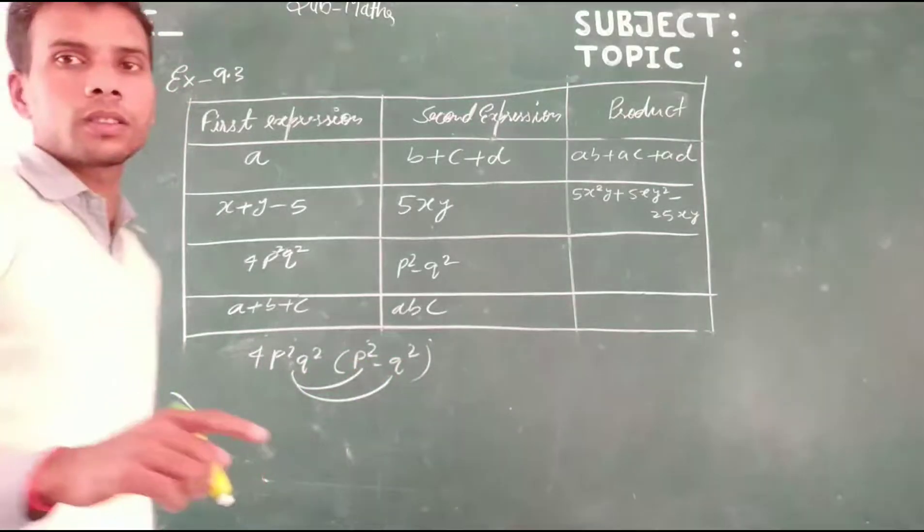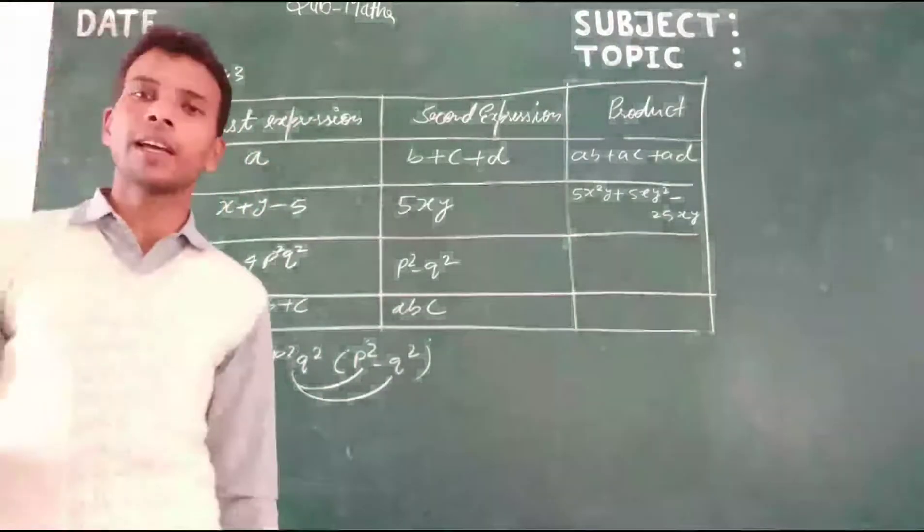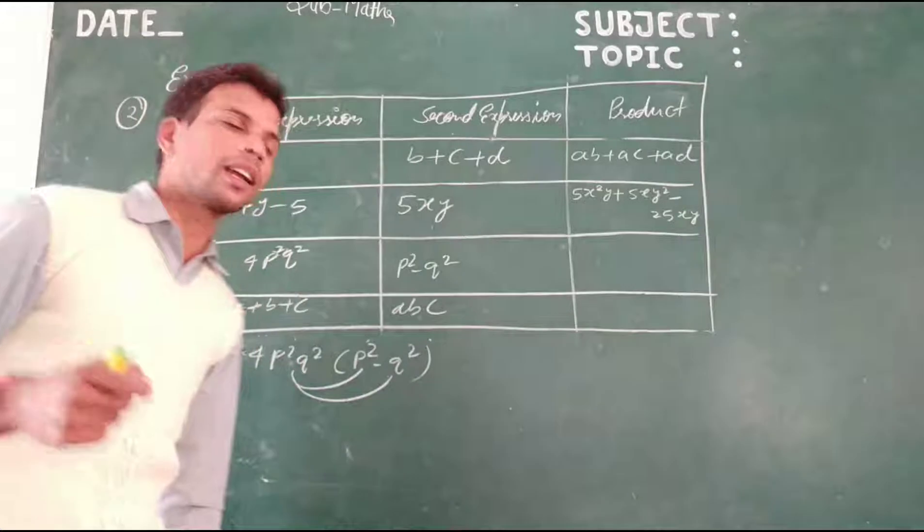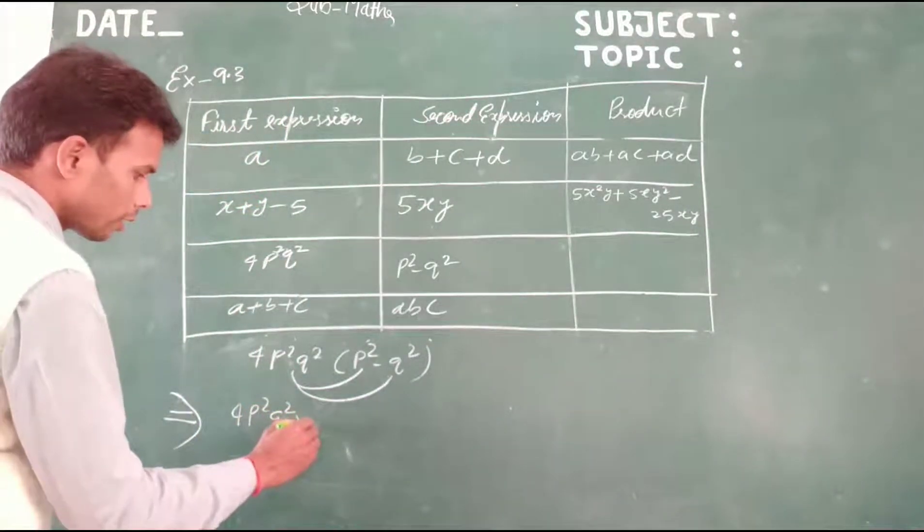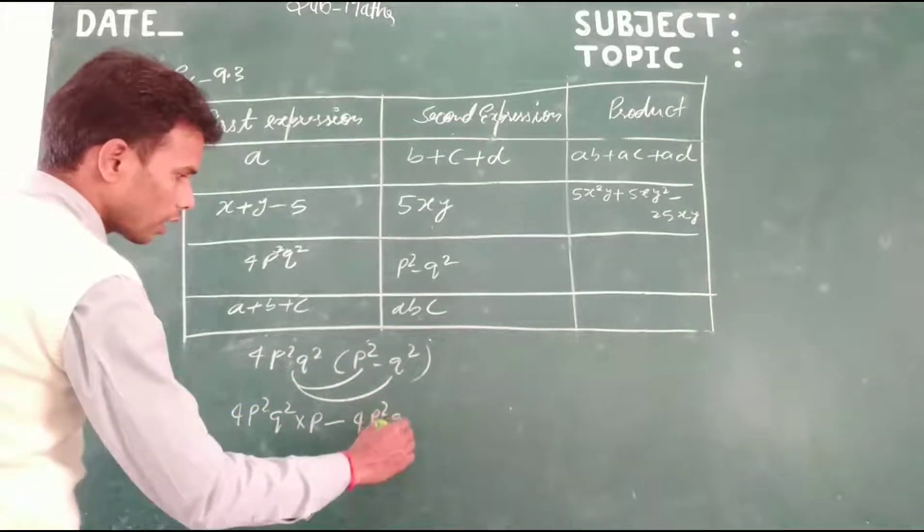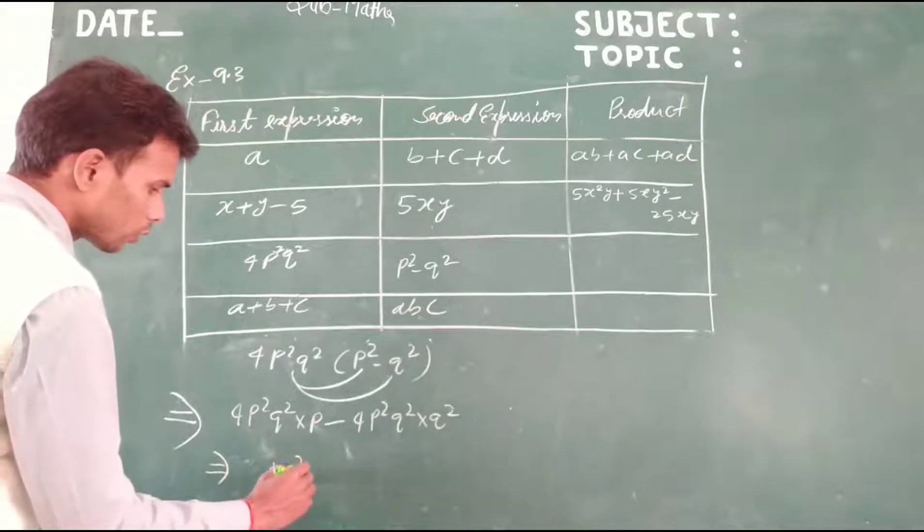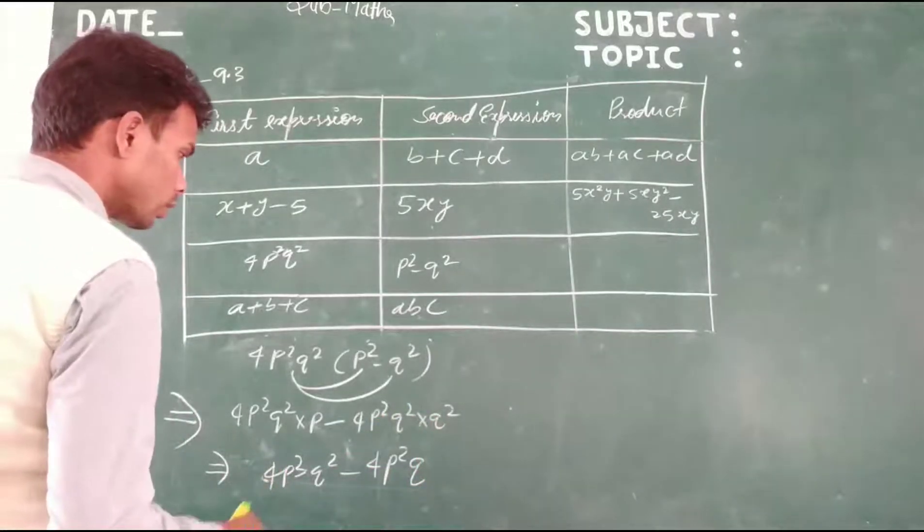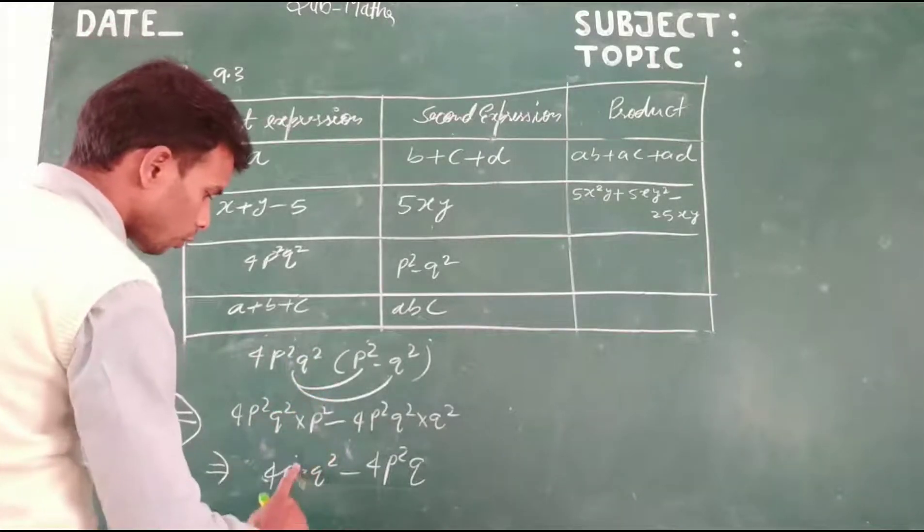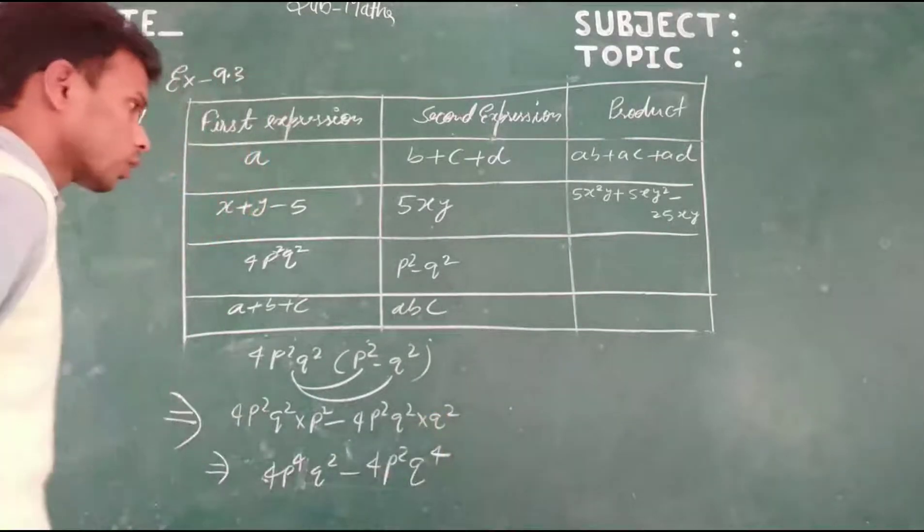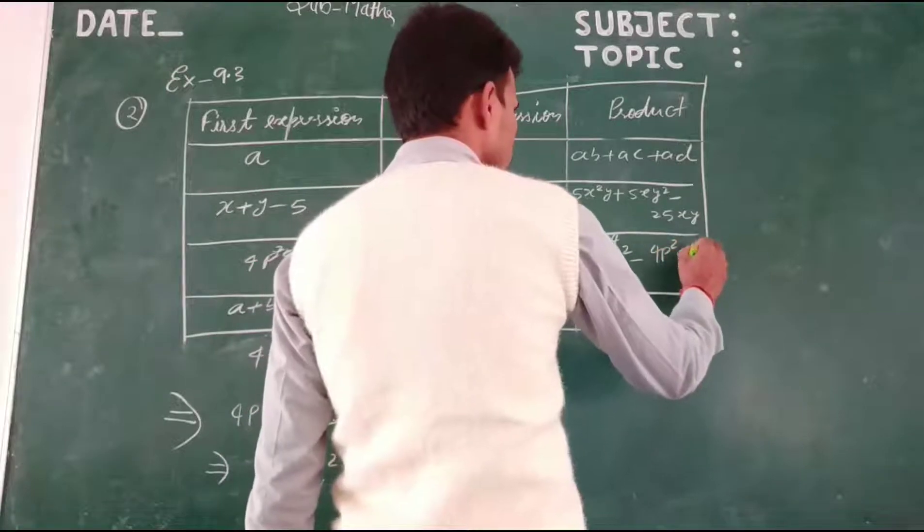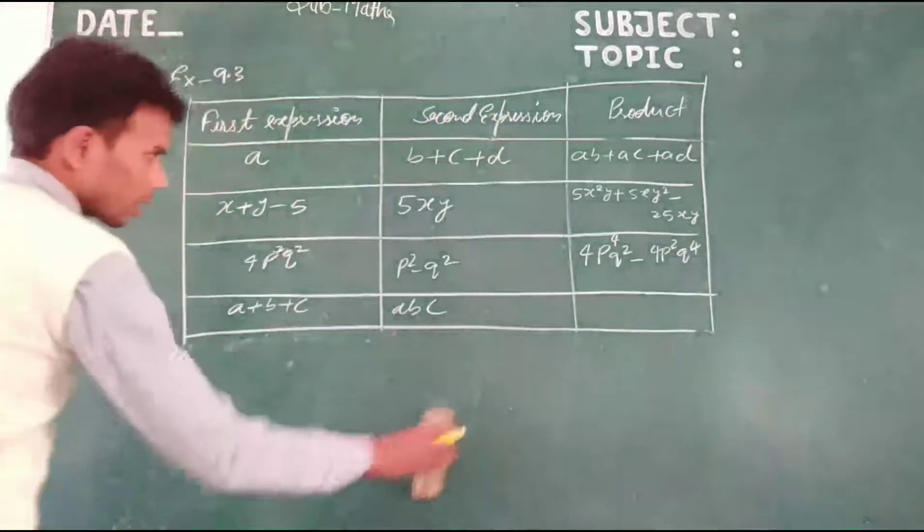We multiply sign to sign, coefficient to coefficient, then variable to variable. If the variables are same, then power will be added. If the variables are different, then we can write directly. So 4P squared Q squared multiply P squared plus minus, minus 4P squared Q squared multiply Q squared. The result we get is 4P to the power 4, Q squared minus 4P squared Q to the power 4.